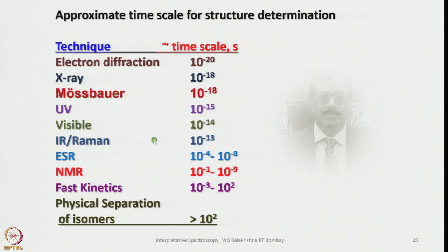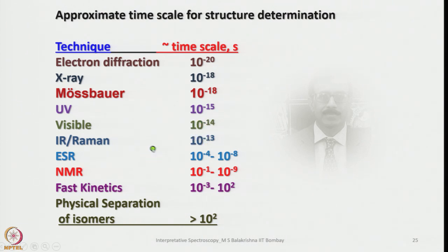We should also know about the approximate time scales encountered with different techniques for structure determination. For example, electron diffraction operates at 10⁻²⁰ s, X-ray and Mössbauer around 10⁻¹⁸ s, UV-visible at 10⁻¹⁵ s, visible at 10⁻¹⁴ s, IR and NMR around 10⁻¹³ s, ESR at 10⁻⁴ to 10⁻⁸ s, and NMR at 10⁻¹ to 10⁻⁹ s. If a dynamic process in the molecule is slower or faster than the NMR timescale, we may need to alter the temperature. Fast kinetics span 10⁻³ to 10² s, and physical separation requires stability for at least 100 seconds.